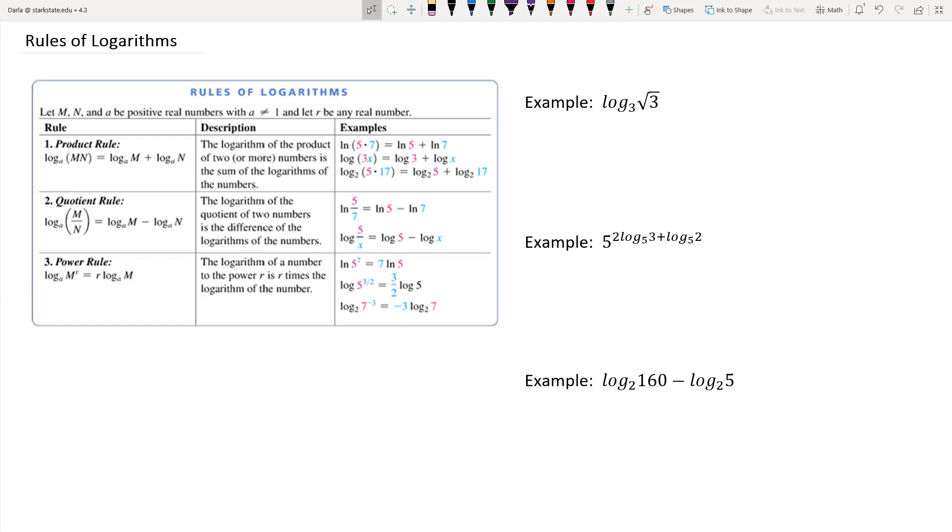The quotient rule, which is our second rule, says that if you take the logarithm of the quotient of two numbers, that is the same as the difference of the logarithm of those numbers.